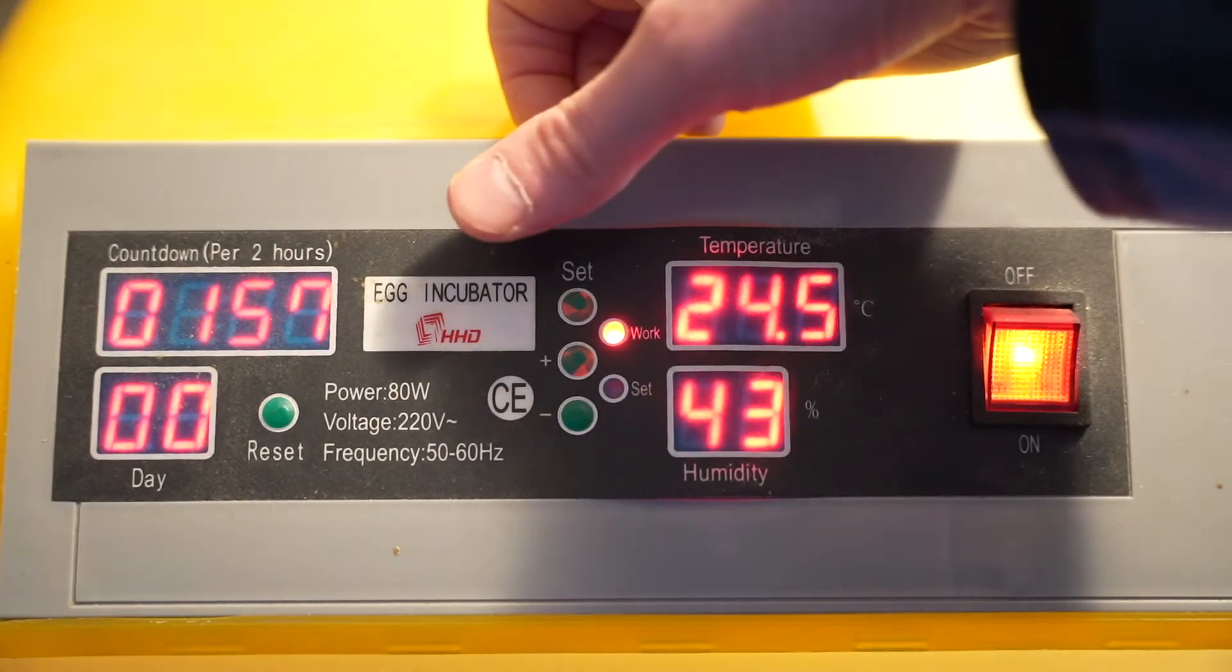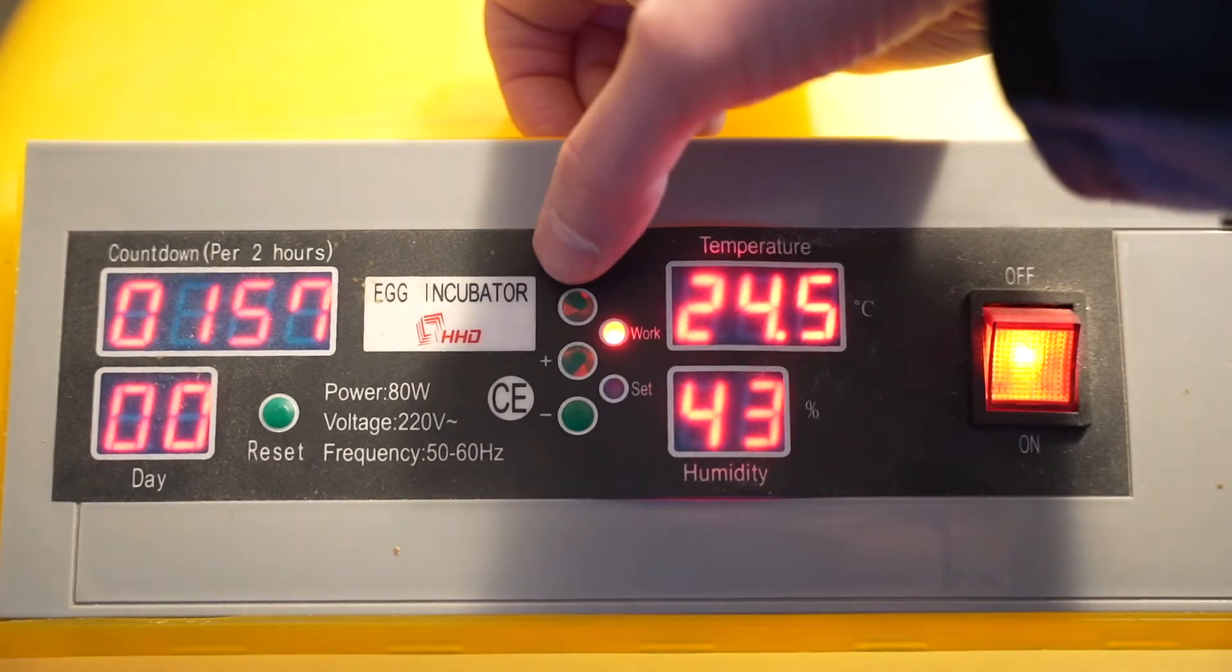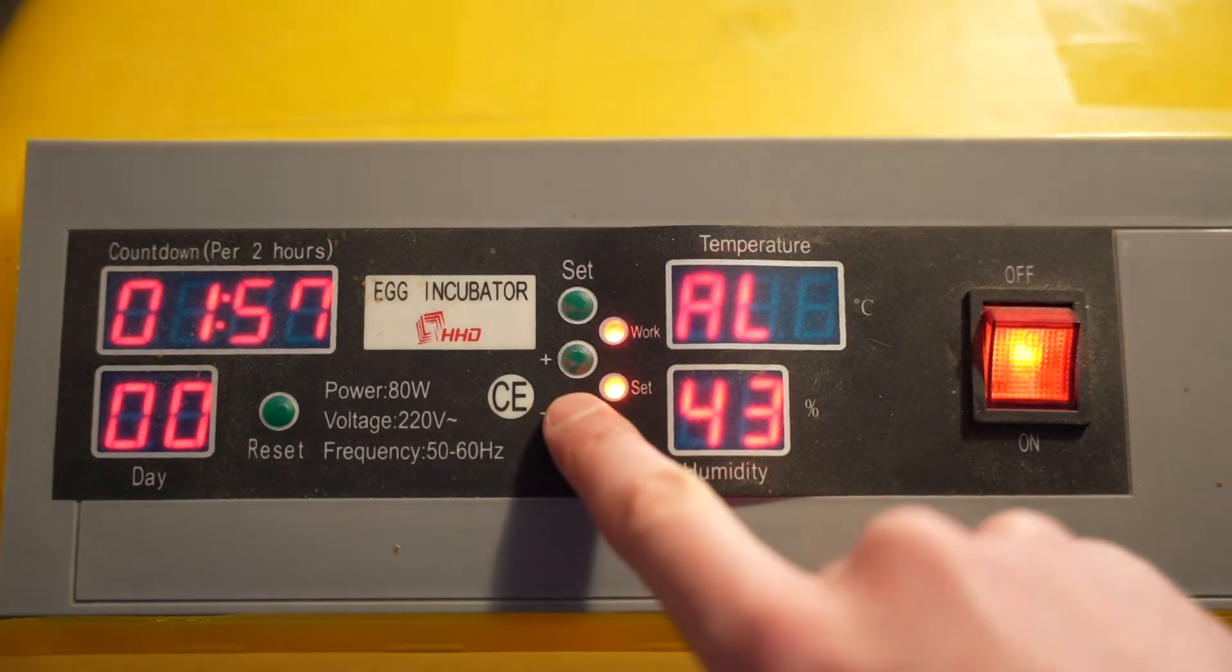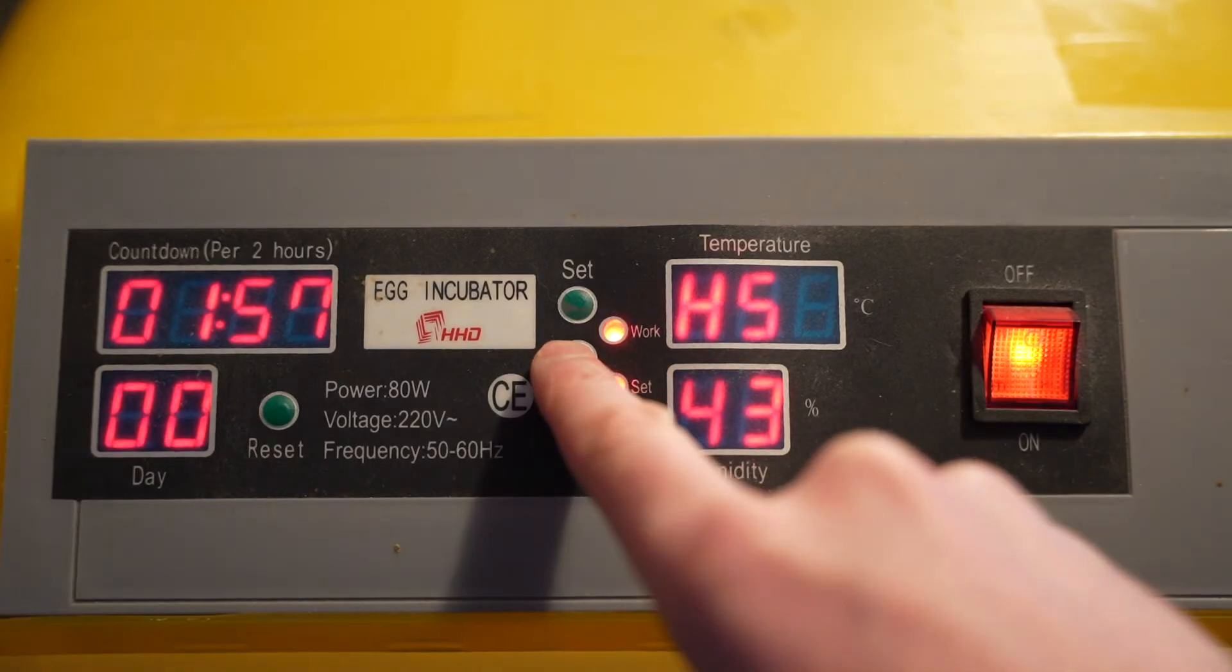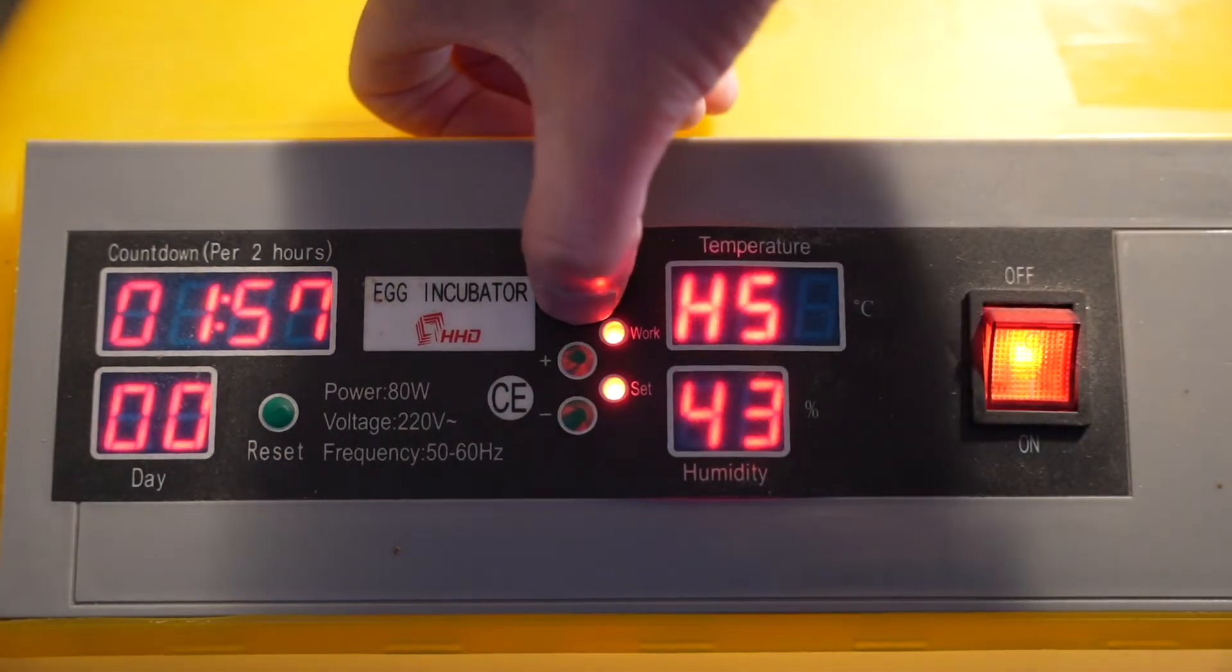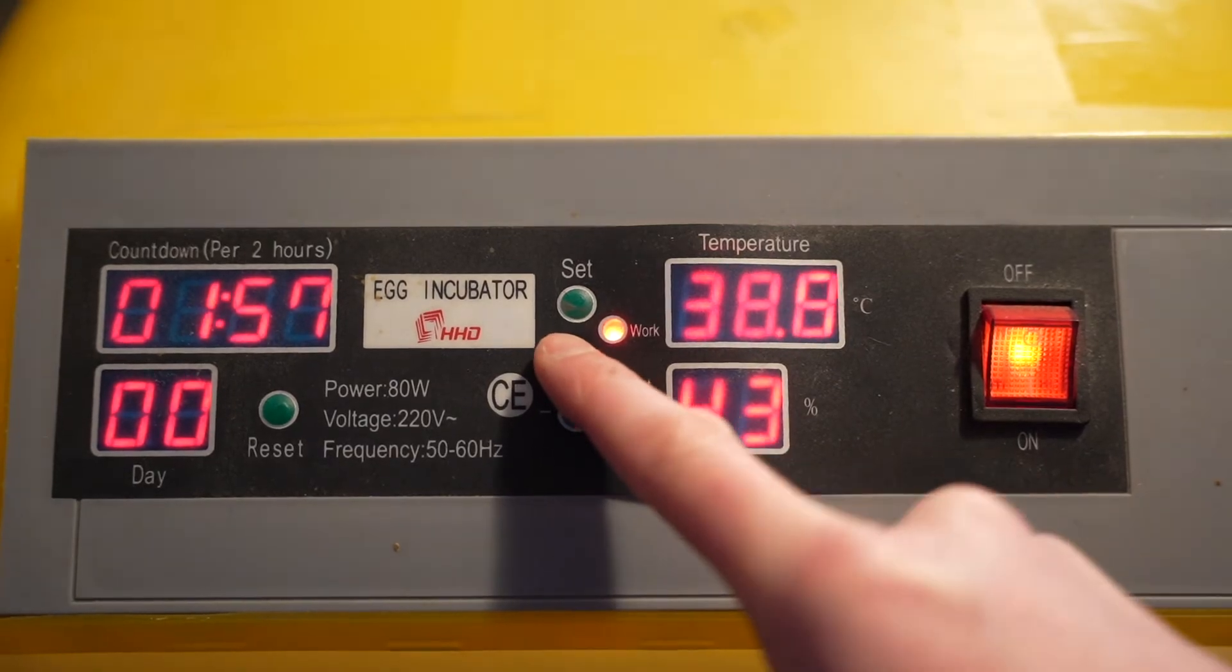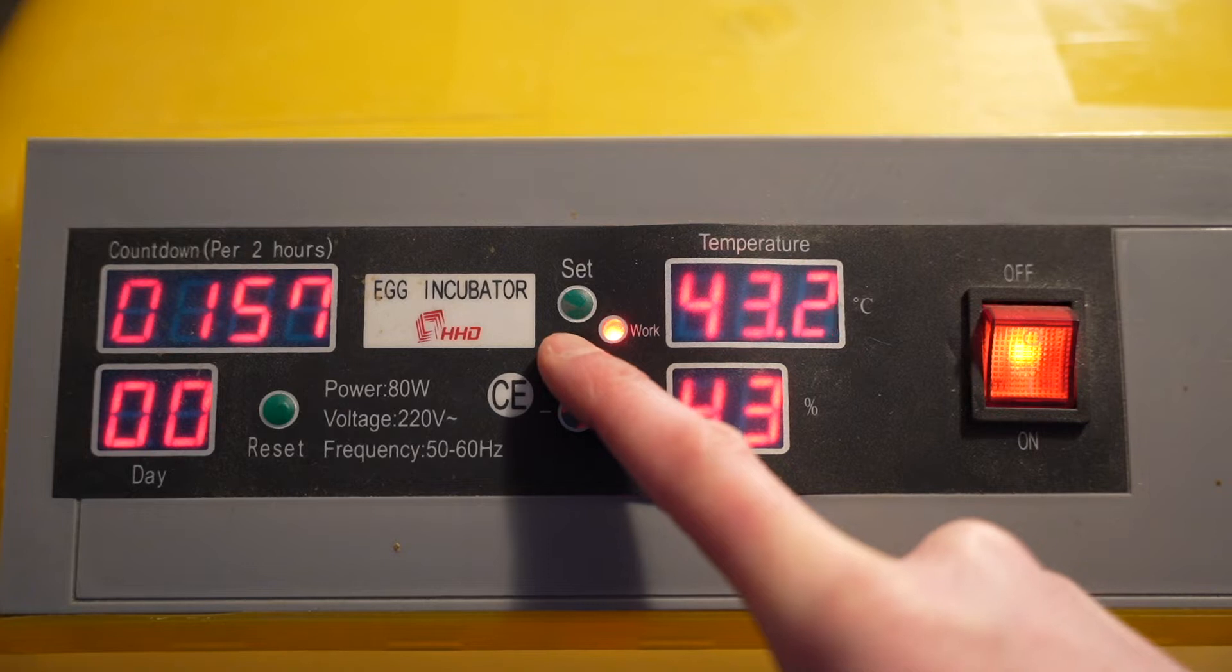And now let's set the alarm for the humidity to 50 percent. We have to hold the set button for three seconds and then we need to go to HS. This is that one. Press the set button again and now we can put this up to whatever we like. For example 50 percent.